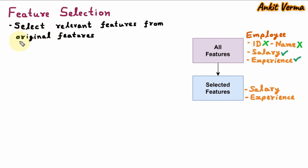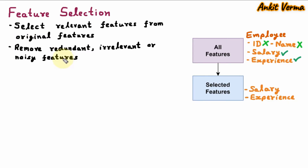Feature selection removes redundant, irrelevant, or noisy features. Redundant means the features which are in duplicacy. Irrelevant means the features which are not important for the algorithm. Noisy means the features which are creating overhead. So all features which are not required will be removed by the feature selection technique.